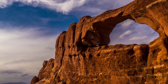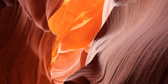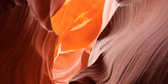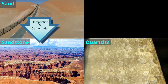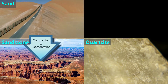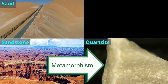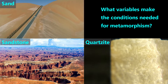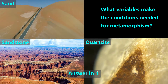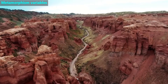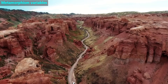This is the sedimentary rock called sandstone. In the prior video, we learned that when layers of sand are compacted and cemented, sand becomes sandstone. Under the right conditions, sandstone will change into quartzite during a process called metamorphism. What do you think the variables are that make the right conditions? To learn what variables turn sandstone into quartzite, let's find some sandstone and quartzite.